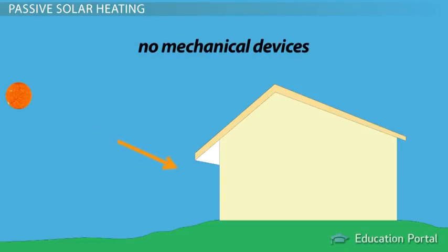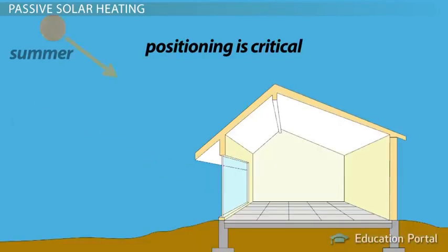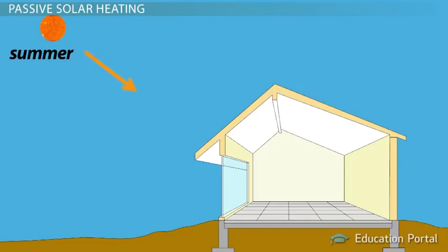Because passive solar heating does not involve any mechanical devices, a home designed for passive solar heating will need to be positioned in a way that allows heat from the Sun to enter in the winter and be rejected in the summer months. This positioning will vary by local climate conditions.